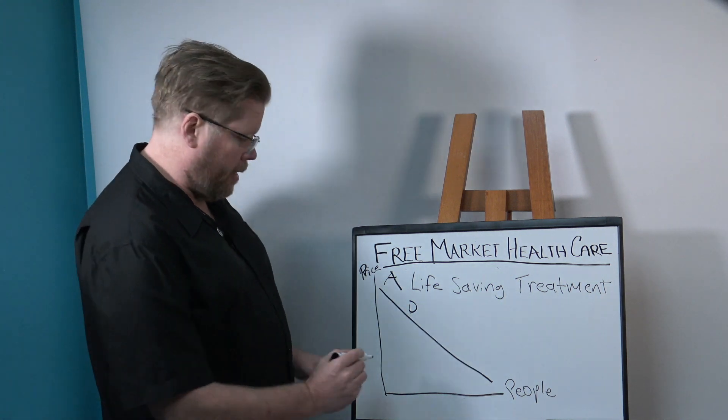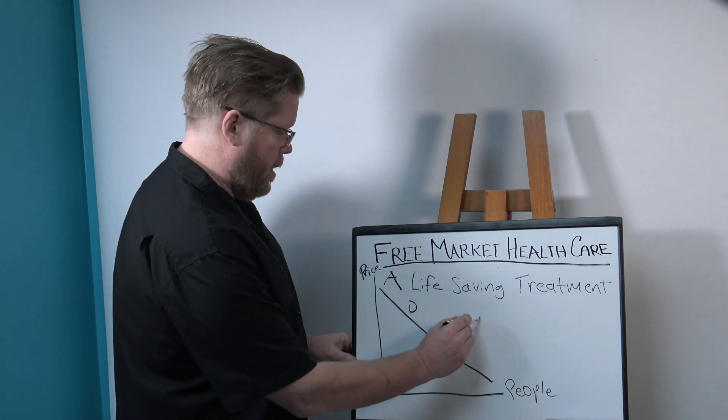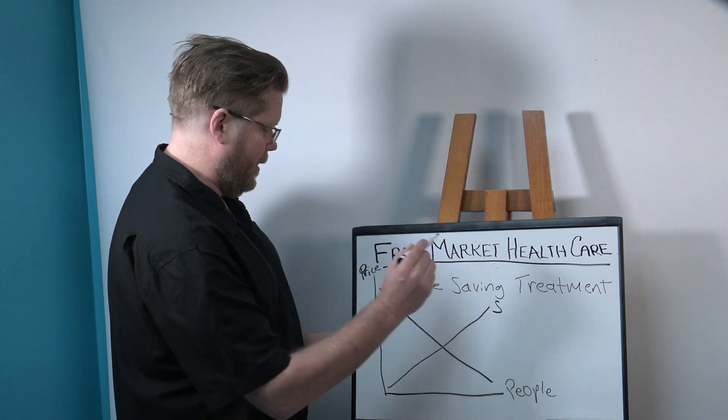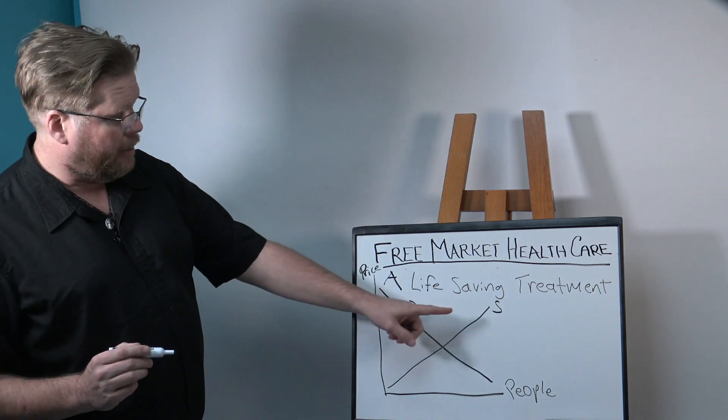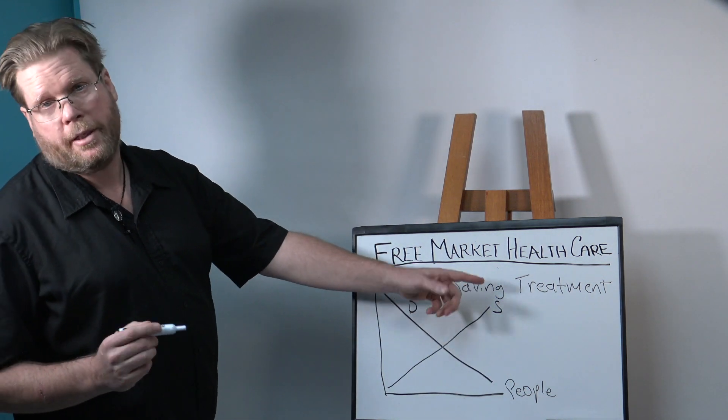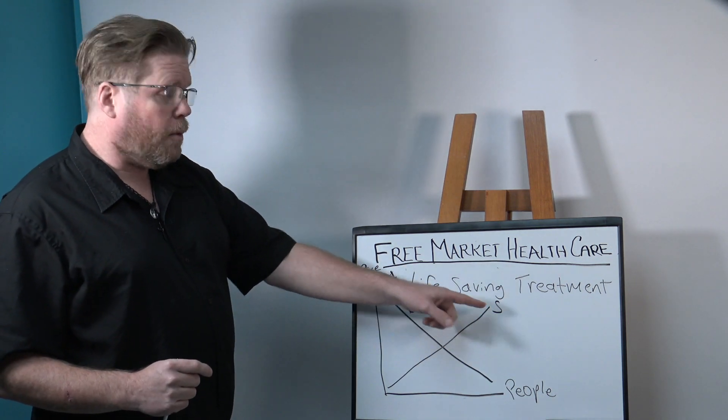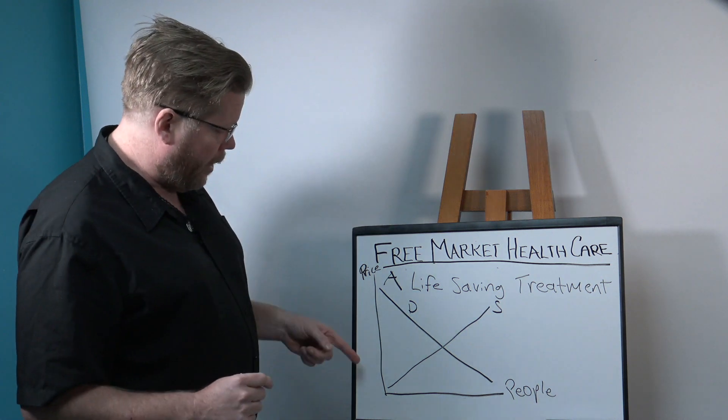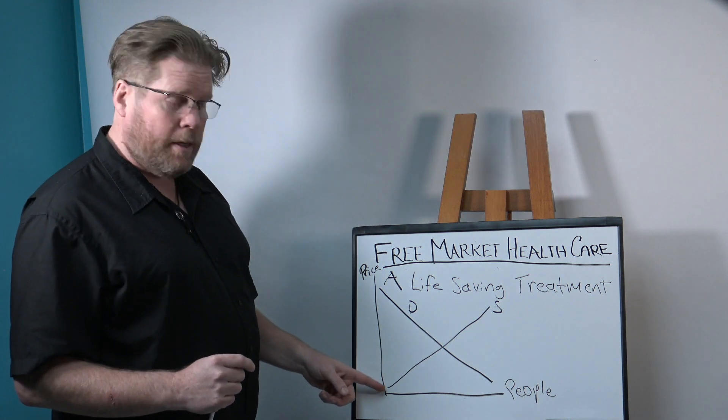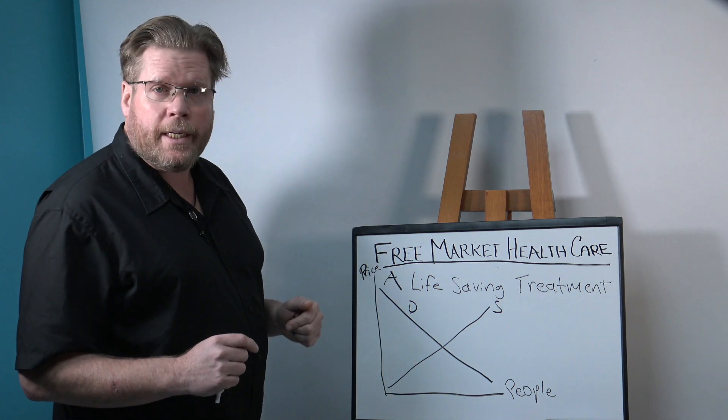Here, now our supply curve. The opposite. The higher the price, the more firms—and people run firms, so we'll just call them people to keep it simple—the more firms are willing to supply it. The lower the price, the fewer firms are willing to supply it.